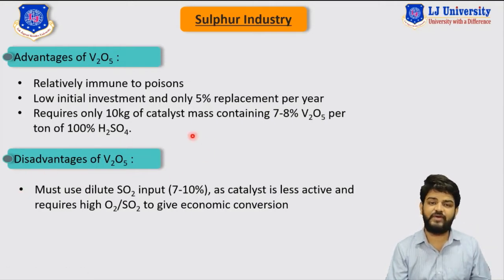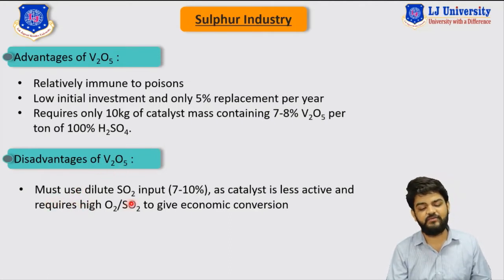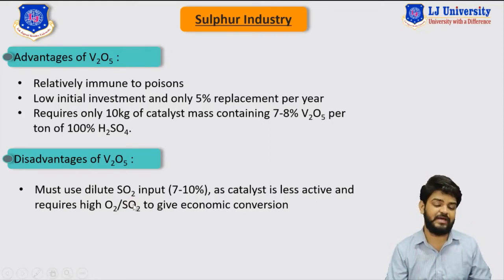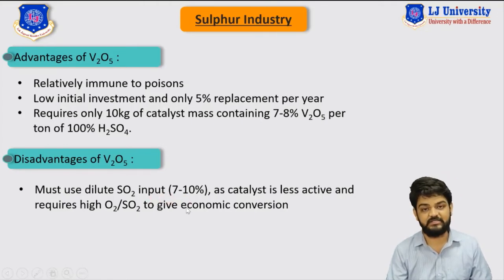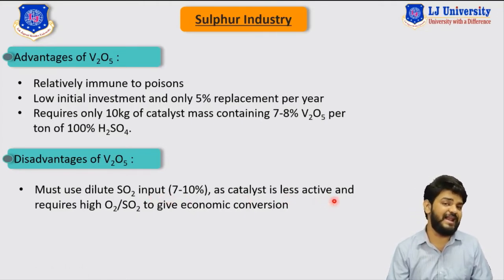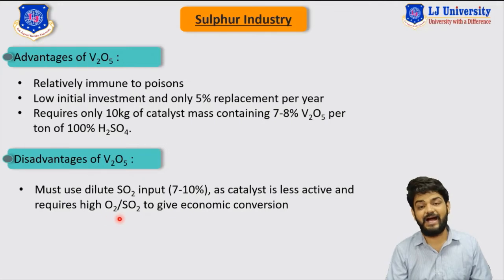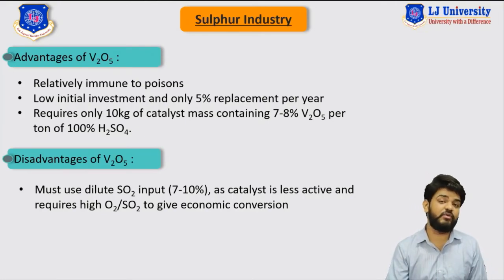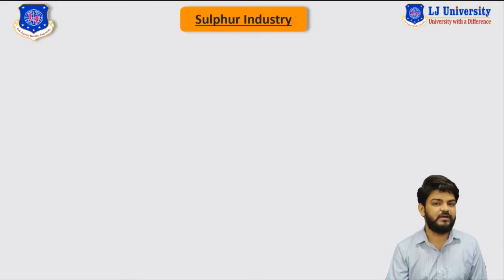Now let's discuss the disadvantages of vanadium pentoxide. As you can see on the screen, it must have diluted SO2 input — we cannot use higher concentrations of SO2 gas. We have to use dilute SO2 gas at up to 7 to 10 percent, as this catalyst is very less active and requires a higher oxygen-to-SO2 ratio for economical conversion.